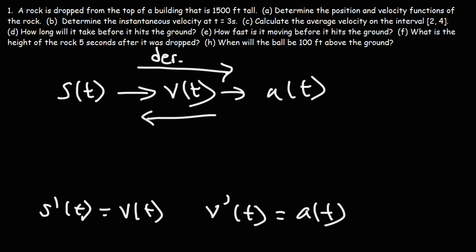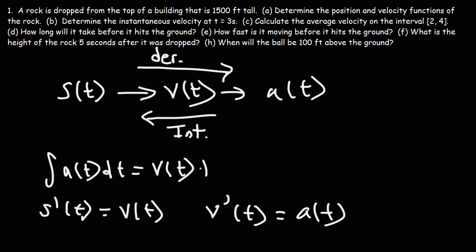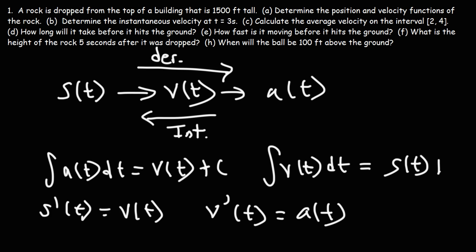Now, if you want to go in the opposite direction, you need to integrate. The integral of the acceleration function will give you the velocity function, plus the constant of integration, the constant c. Likewise, the integral of the velocity function — the integral of v(t) dt — is going to give you the position function with the constant c, which you have to figure out.